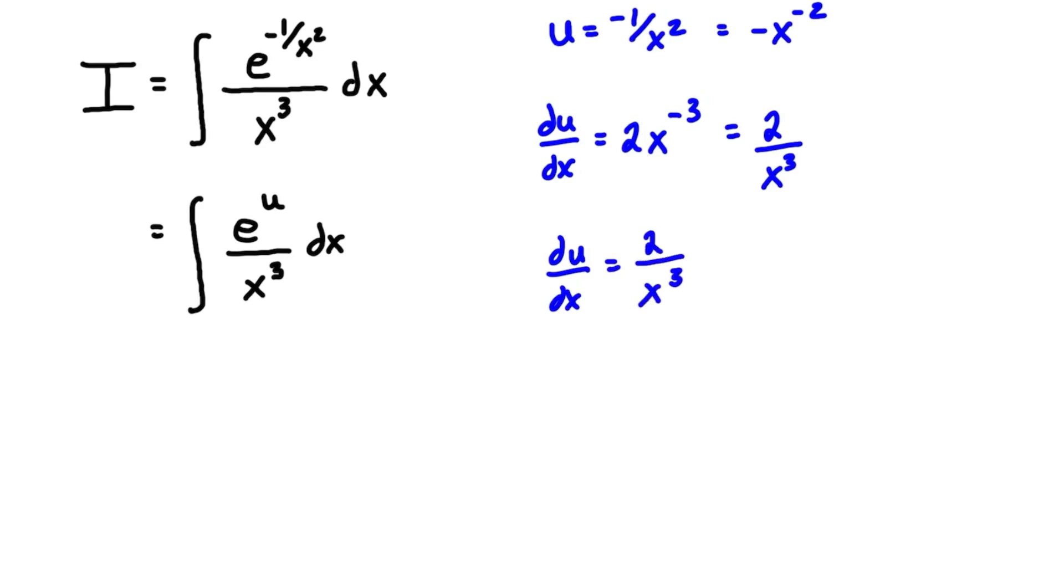Now if we write these side by side, so we have du/dx is equal to positive 2 over x to the power of 3. The next thing that we always want to do with u substitution is isolate the dx here, so basically we're going to bring the dx up, the 2 back down, and the x³ up there, and we can isolate for dx to be x cubed over 2 du.